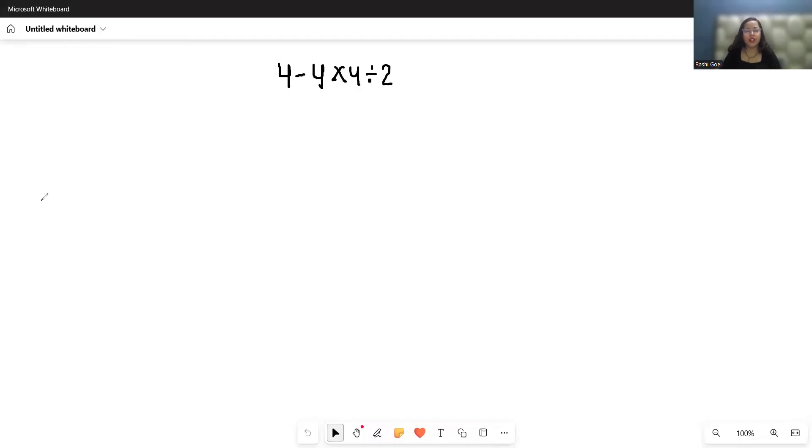Hello everyone, welcome to my channel. We have the expression 4 - 4 × 4 ÷ 2. Let's start with today's video solution. Many people solve it incorrectly: 4 - 4 = 0, then 0 × 4 ÷ 2. They get 0 × 4 = 0, and 0 ÷ 2 = 0. This is the wrong approach.